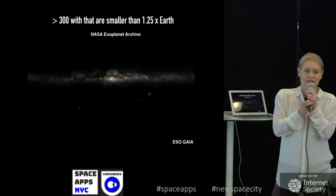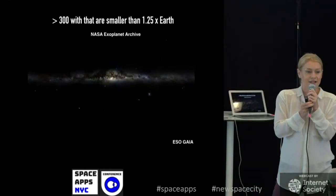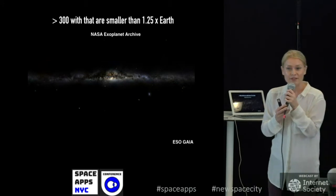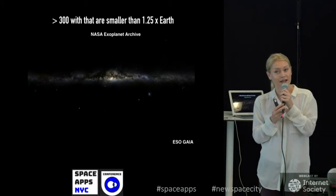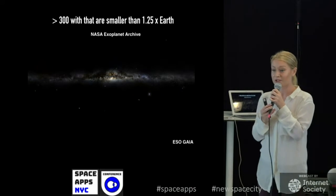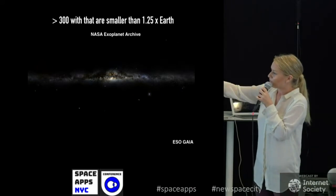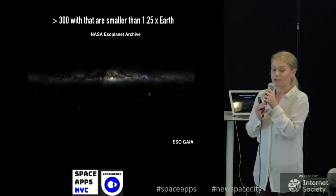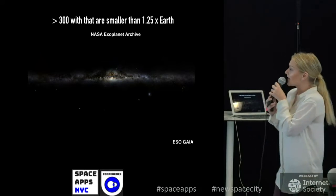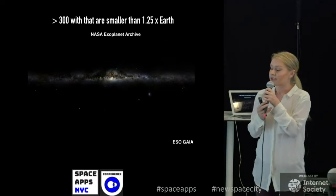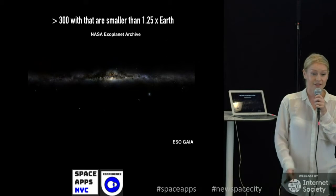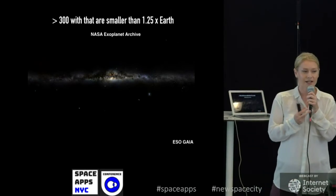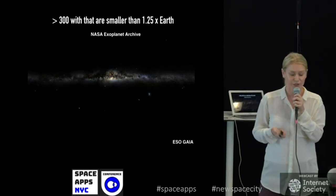One other interesting thing to ask is: is there an Earth 2.0 out there? Have we actually been able to detect something exactly like our own Earth in our own galaxy? Right now we know of roughly 300 planets that have sizes smaller than 1.25 times the size of Earth. They're not exactly Earth analogs — we haven't actually found Earth 2.0 — but we're getting closer.